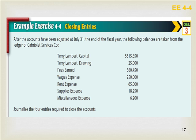After the accounts have been adjusted at July 31st, the end of the fiscal year, the following balances are taken from the ledger of Cabriolet Services Company: capital $615,850; drawing $25,000; fees earned $380,450; wages expense $250,000; rent expense $65,000; supplies expense $18,250; miscellaneous expense $6,200. Pause the video now and complete the four closing entries. When you've finished, resume the video and check your answers.